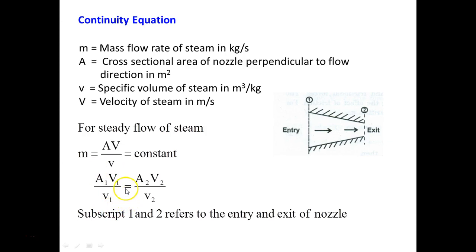A₁V₁/v₁ is the mass flow rate at the inlet of the nozzle, and A₂V₂/v₂ is the mass flow rate at the exit. So mass flow rate at the entry of the nozzle equals mass flow rate at the exit of the nozzle. That is what the continuity equation states.